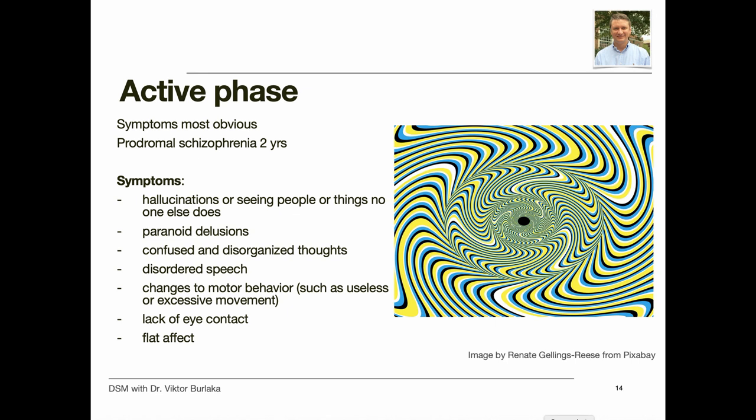In the active stage, symptoms may be the most obvious and include hallucinations or seeing people or things no one else does, paranoid delusions, confused and disorganized thoughts, disordered speech, changes to motor behavior, lack of eye contact, and flat affect.